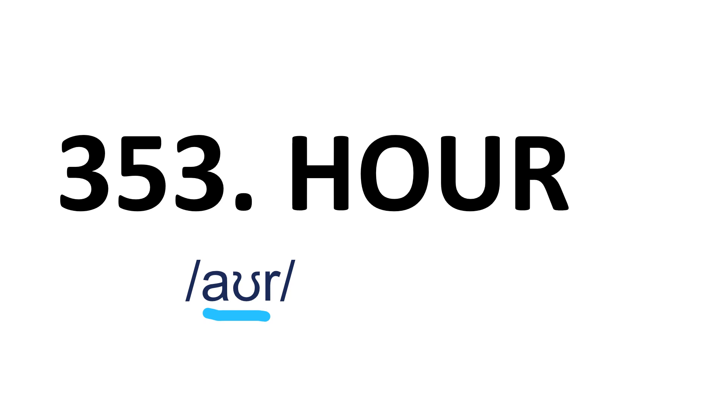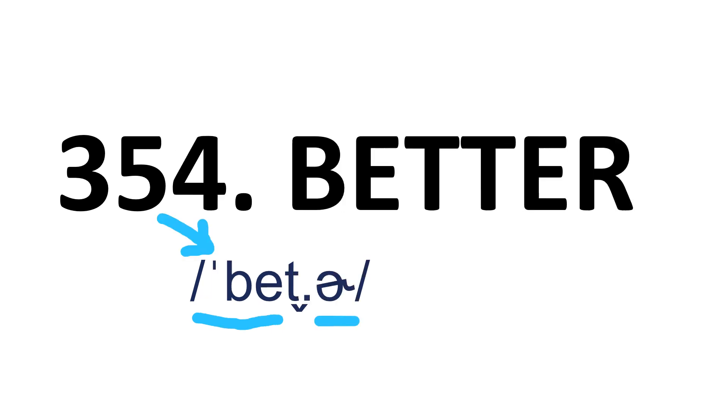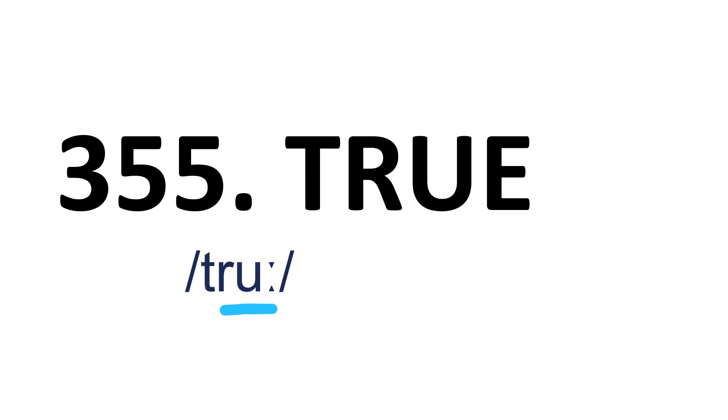Hour — it's a one-syllable word. Hour. Better — it's a two-syllable word and stress is on the first syllable. Better. True — it's a one-syllable word. True.